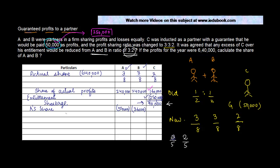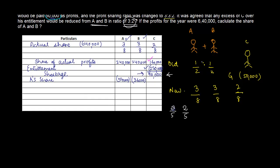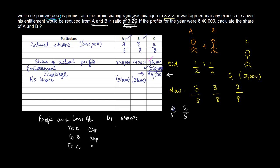Now, instead of one journal entry, let me pass two entries so it will be much clearer — though it can be done in one entry as well. Originally, the Profit and Loss account will be debited by the total profit of 640,000, credited to A's, B's, and C's capital accounts. A gets 240,000, B gets 240,000, and C gets 160,000.